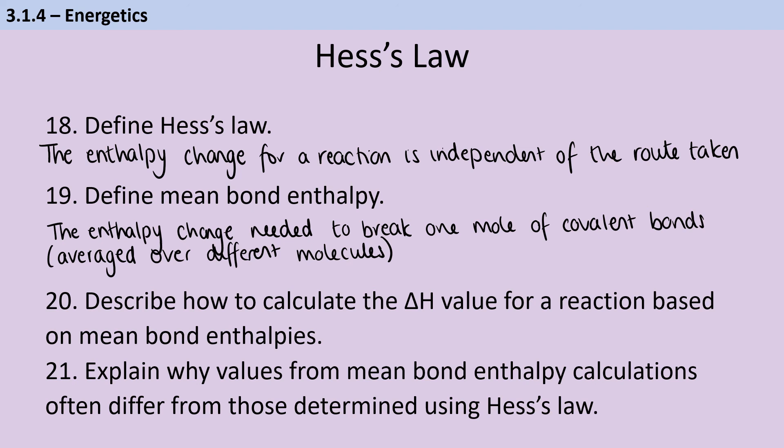In order to calculate the delta H value for a particular reaction, if all we have is mean bond enthalpies, then we need to add up the value of all of the bonds that are going to be broken and add up the value of all the bonds that are going to be made. And then we do the sum of the bonds broken minus the sum of the bonds made.